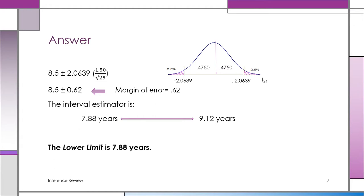Since this is a small sample, we lose one degree of freedom — one-sample case, so we're working with T₂₄. For 0.025 in each tail, the T table gives a critical value of 2.0639. So we compute 8.5 ± 2.0639 × (1.50 / √25). The margin of error works out to 0.62.